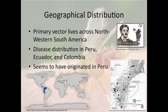The primary vector for Carrion's disease lives across northwestern South America, but the disease itself is distributed only in Peru, Ecuador, and Colombia. It seems to have originated in Peru, and the areas of focus can be seen in the bottom right.